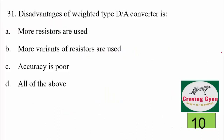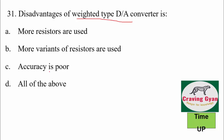Starting with the 31st question: disadvantages of weighted type D2A converters. The options are: more resistors are used, more variants of resistors are used, accuracy is poor, or all of the above. In weighted type D2A converters, the stages use resistors of 2R, 2²R, 2³R up to 2ⁿR — so more resistors and more variants are used. Since resistors are temperature-dependent, accuracy degrades. The correct answer is option D: all of the above.